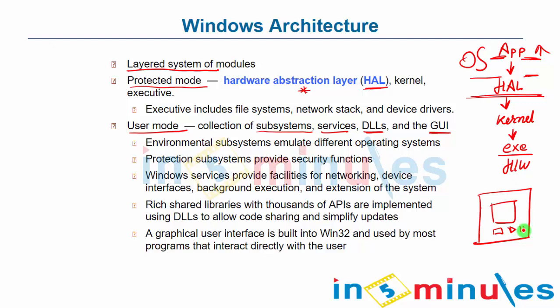The next is the environmental subsystem, which basically allows us to emulate different operating systems. Suppose you want to use Linux — the question is how would you run it. One option is to partition, install, and work. But in some cases, we don't need to do that because we just want to test the system for a while. What you get is something called a virtual OS — an emulated operating system within Windows 7, which allows you to run one operating system within another operating system.